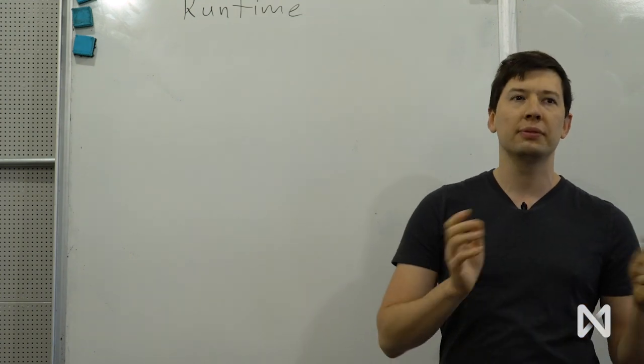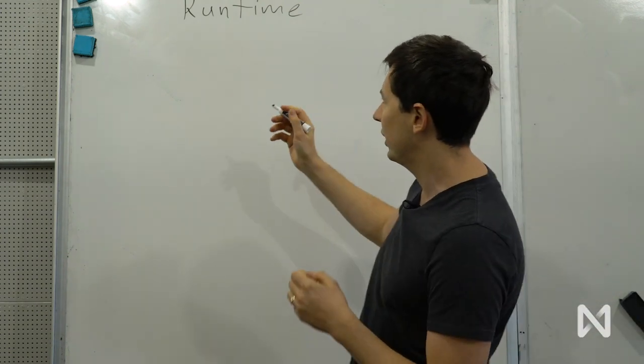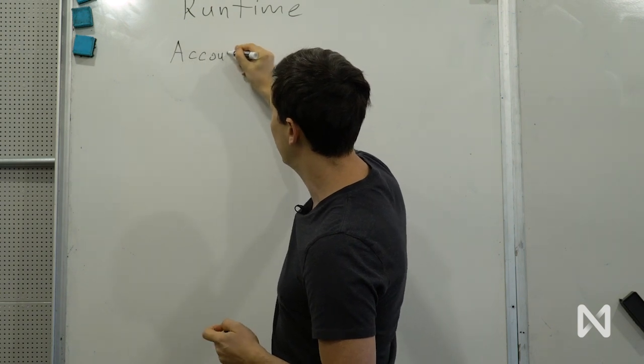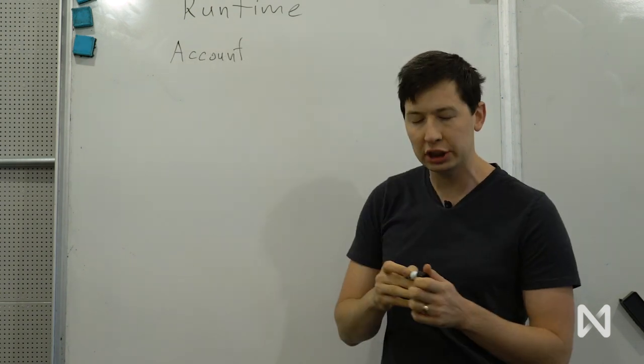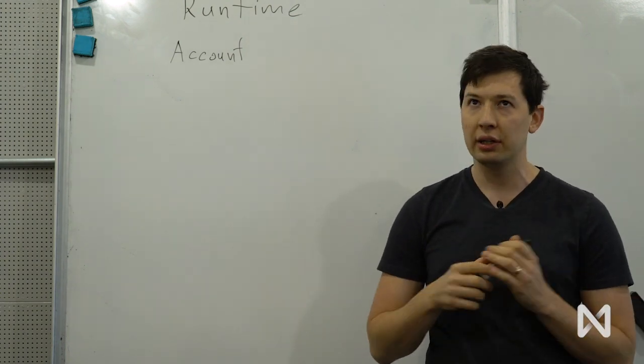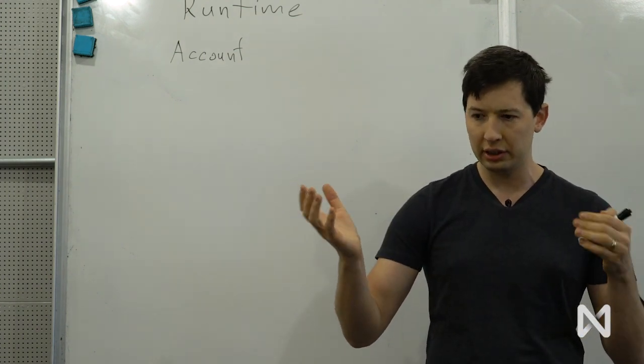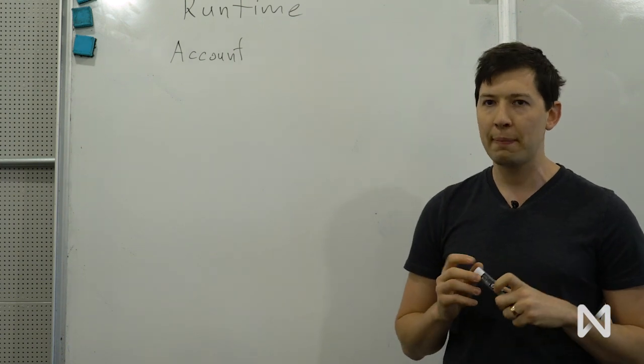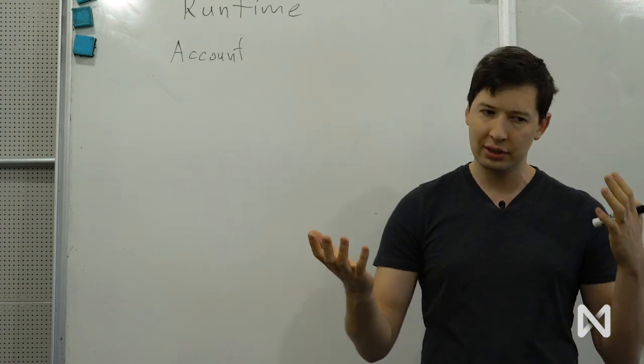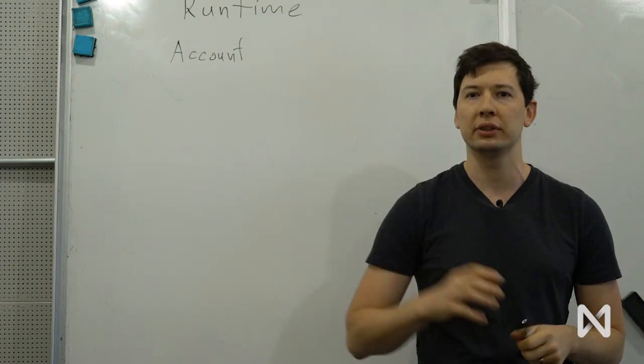So let's start first with the account model. On Runtime we have accounts. In a traditional blockchain like Ethereum or Bitcoin, accounts are represented by a public key and this public key is an account ID. So what's a public key? A public key is just a unique cryptographical primitive that is known to everybody who wants to interact with your account.